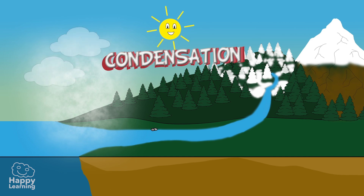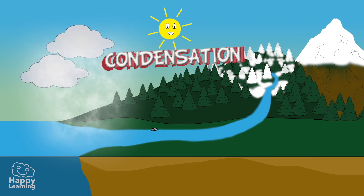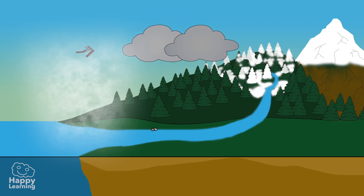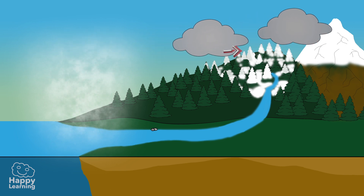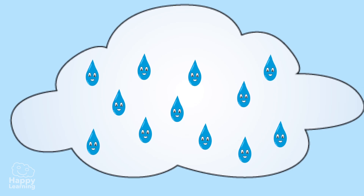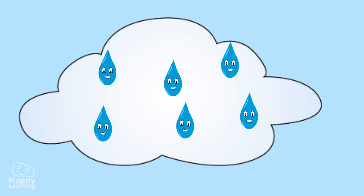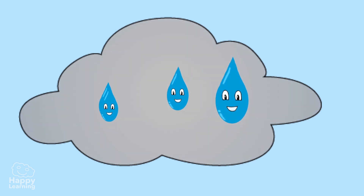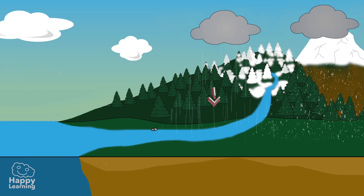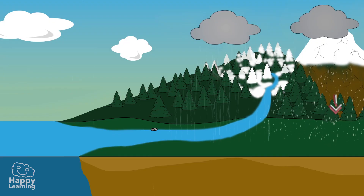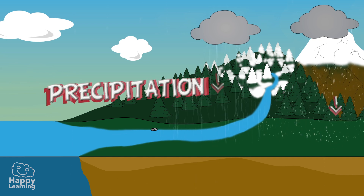Once the water has condensed and turned into a cloud, it continues its amazing journey by being blown by the wind, traveling from one place to another. Clouds are actually tiny little drops of water suspended in the air. But when the clouds grow, they collect more and more water. These water drops then crash into each other and become bigger drops of water. Then, at some point, they will end up falling to the ground in the form of rain or even snow. This stage of the water cycle is called precipitation.